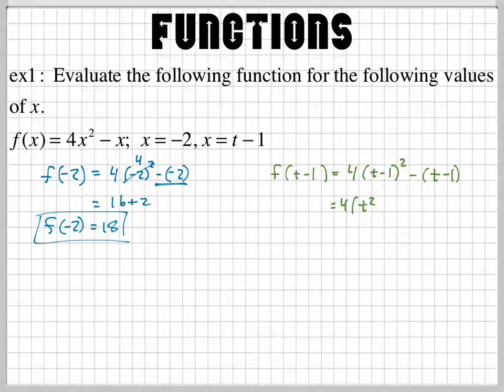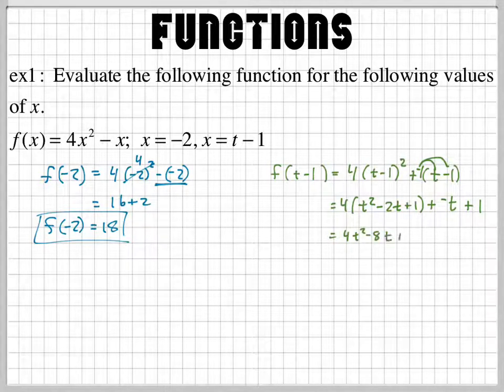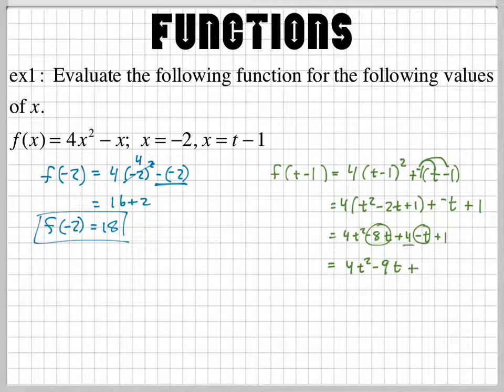So we're going to have 4 times t squared minus 2t plus 1. And then this guy right here is like adding a negative 1 times that. So we're going to add negative t plus 1 because negative 1 times positive t is negative t. Negative 1 times negative 1 is going to give you the positive 1. Not done. Got to distribute the 4. So I have 4t squared minus 8t plus 4. Then you have minus t plus 1. All right, combine like terms, the t's. How many negative t's do I have? So I have negative 9 t's plus, and I have a 4 right there and a 1 right there, so that's 5. So f of t minus 1 equals that, and that's your answer.